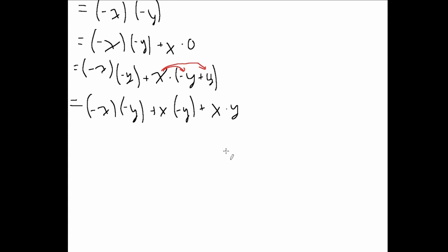Now notice in these first two terms we have a similar number. We have -y in the first one and -y in the second one. We can factor out a -y. So this is just equal to -y multiplied by -x plus x. You can distribute this and you will get the exact same thing up here, all these terms are equal, and then plus our final term x multiplied by y.